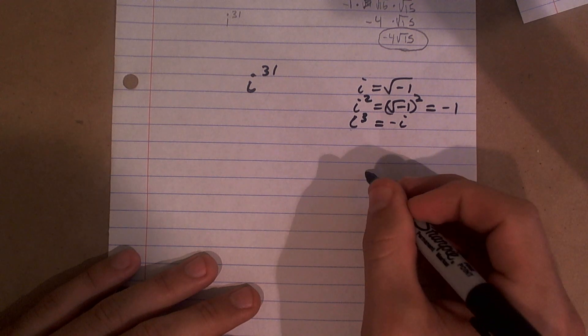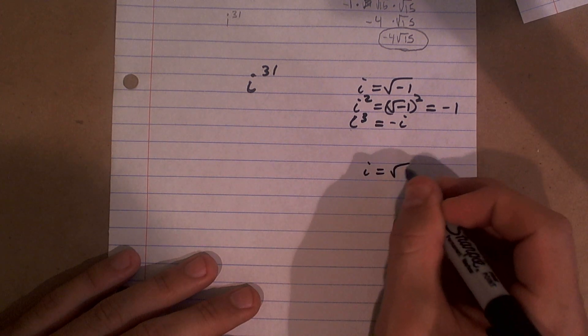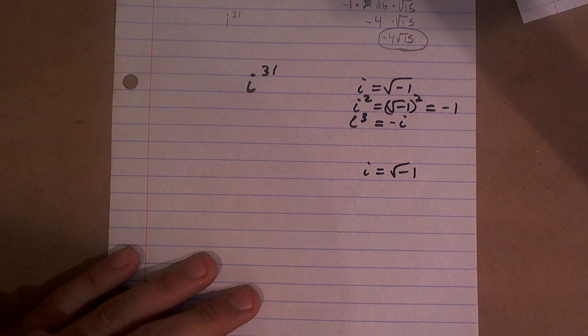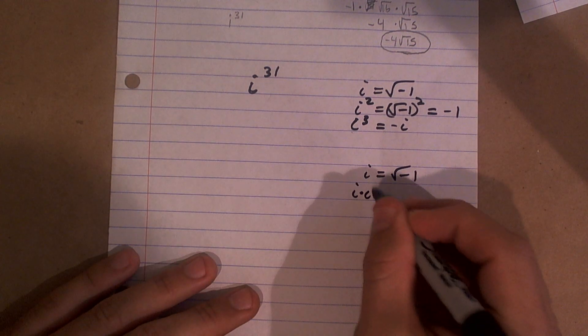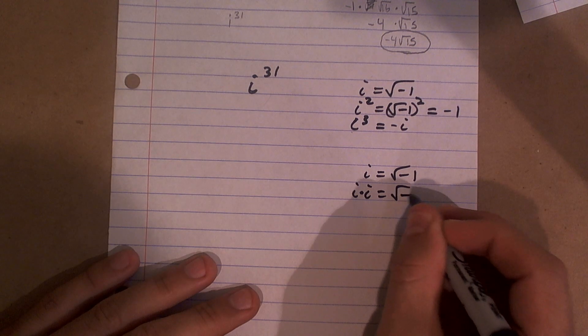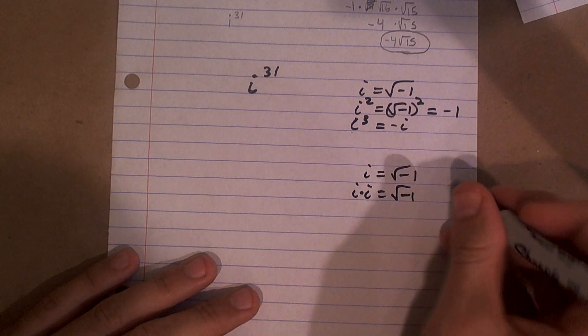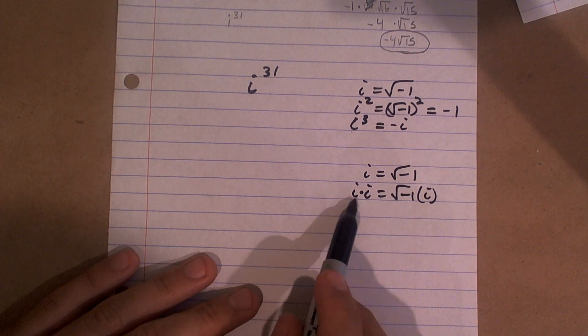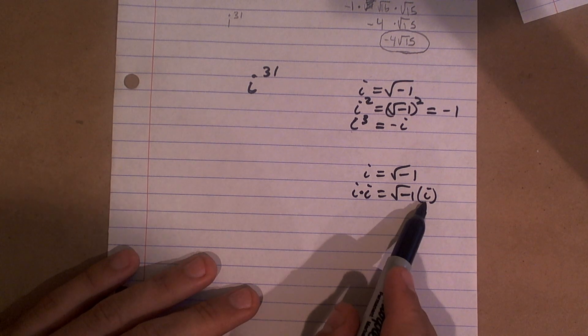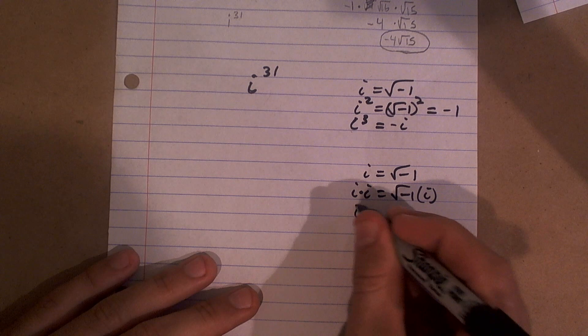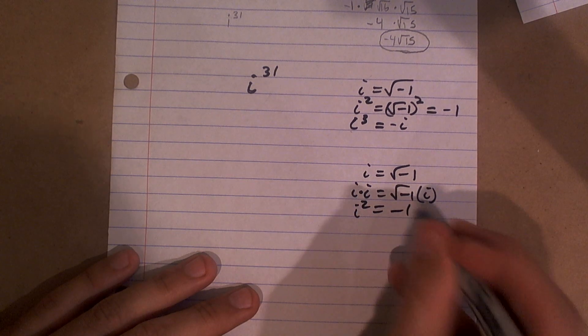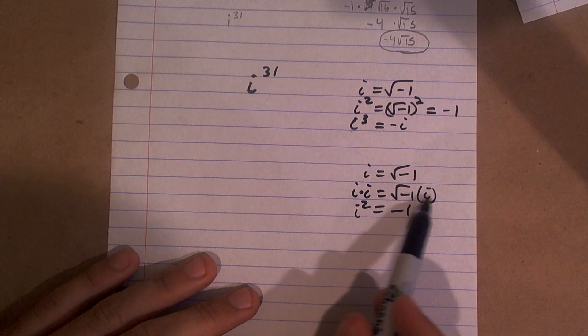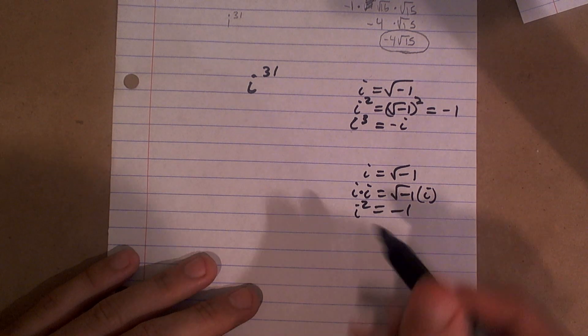So think about it this way. You have i equals the square root of negative 1. So if I multiply by i on both sides, that's the square root of negative 1 again. So that equals negative 1. So i squared equals negative 1 because i is the square root of negative 1. So that's the square root of negative 1 times the square root of negative 1 is negative 1.